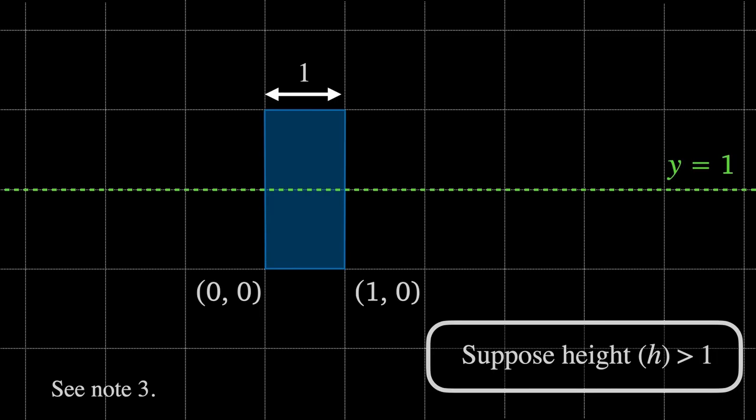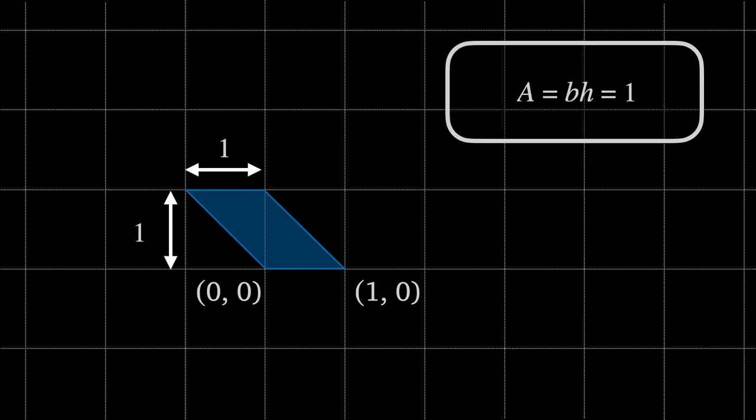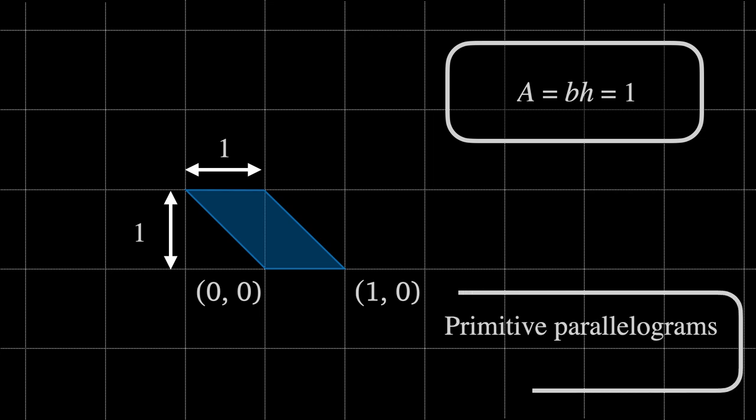Therefore the height of our transformed primitive parallelogram is necessarily 1 and so all primitive parallelograms have an area of exactly 1.